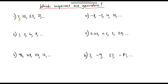The first sequence: to go from 7 to 15 it's hard to see what I'm multiplying by, but I can see I'm adding 8. From 7 to 15 I'm adding 8, from 15 to 23 I'm adding 8, and again from 23 to 31. So I'm adding the same amount each time — this is not geometric, this is an arithmetic sequence.